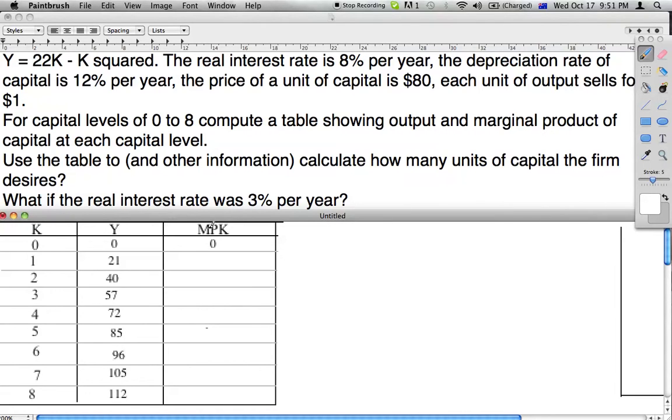After that, we want to figure out the marginal productivity of capital. It's important to note that each unit of output sells for $1, so we don't need to do another value marginal productivity graph.